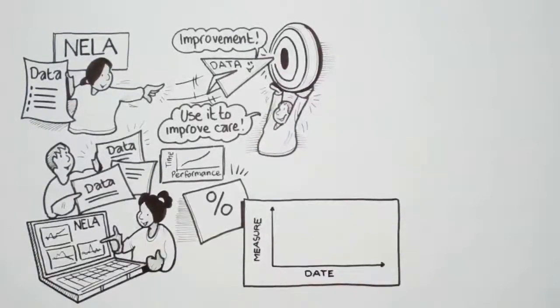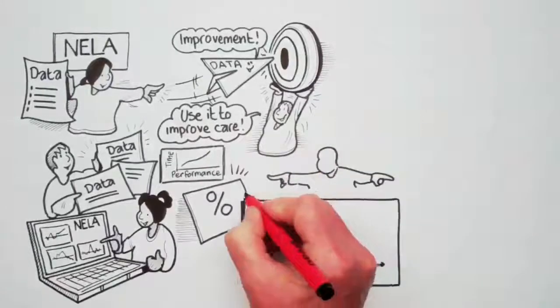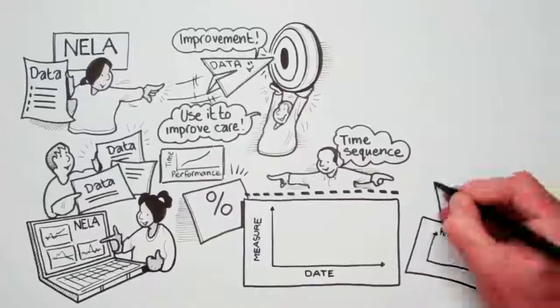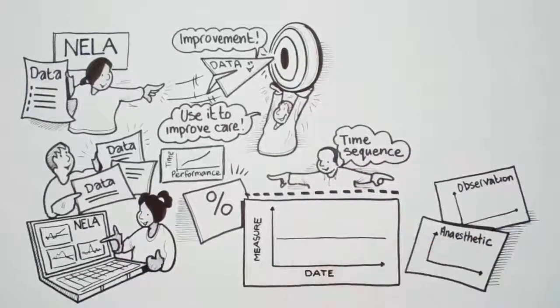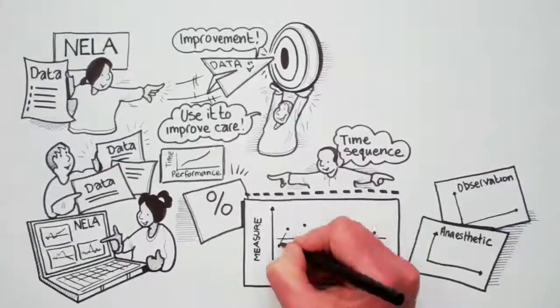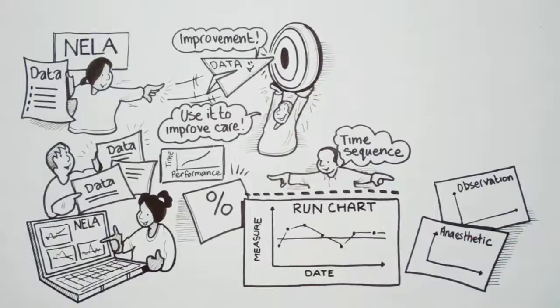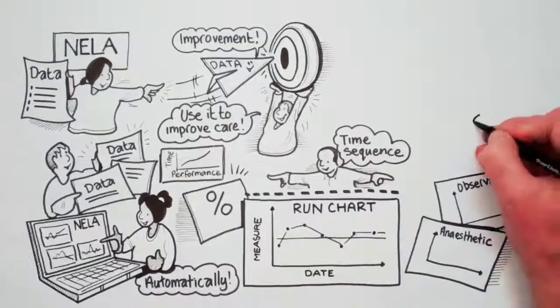We see a version of these all the time in our anesthetic or observation charts. So we connect the dots with the line and include a line with the median value of the data over the period we're looking at, and we have our run chart. The NILA dashboard presents your data this way automatically.